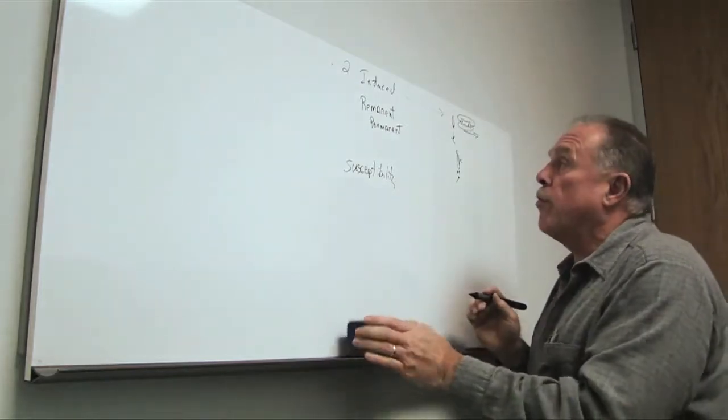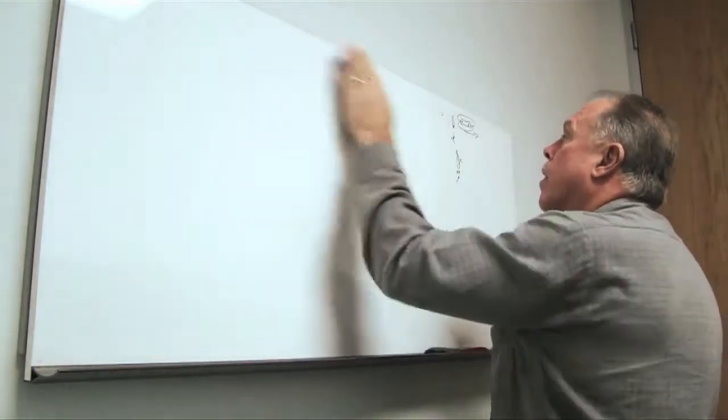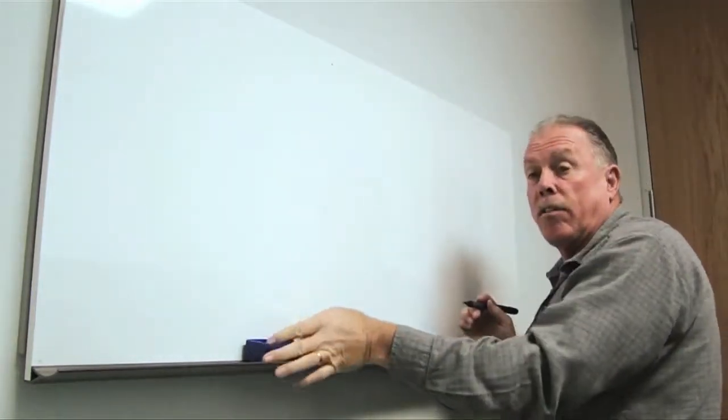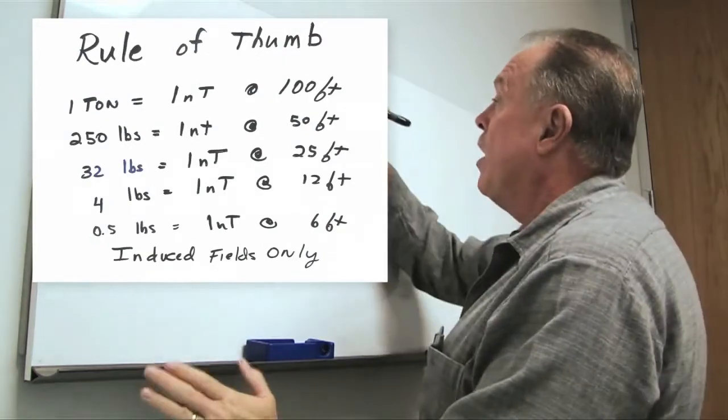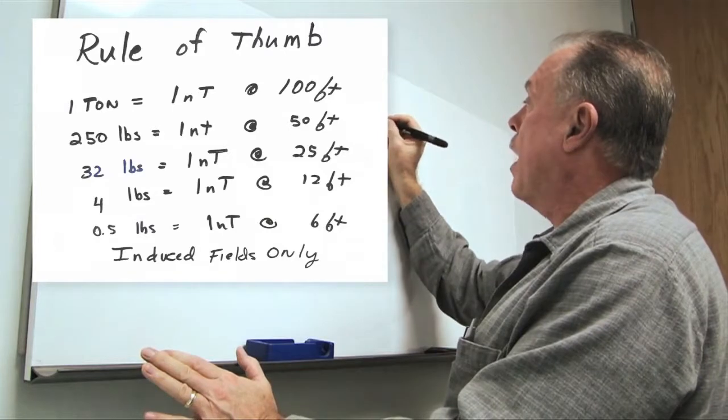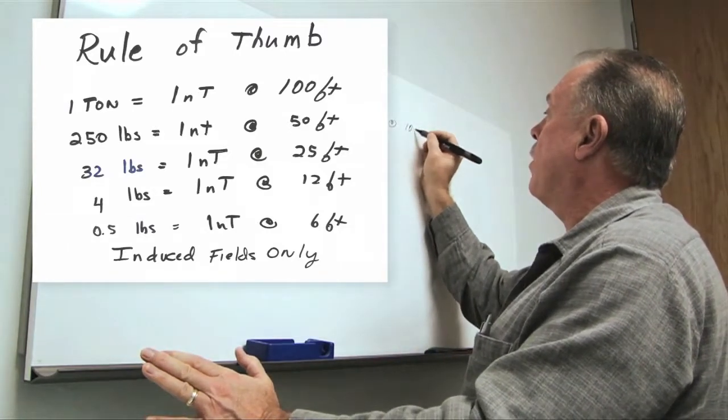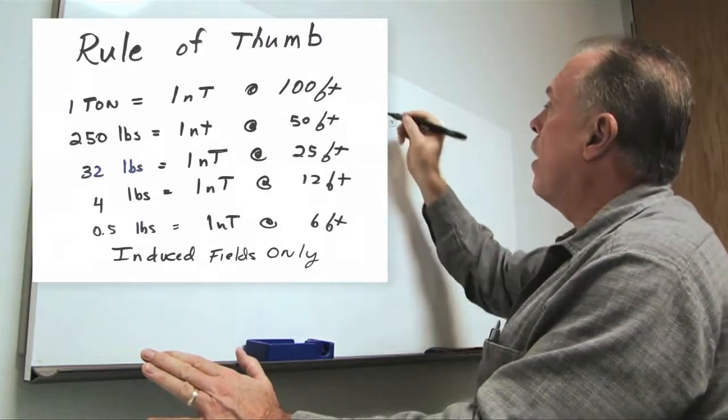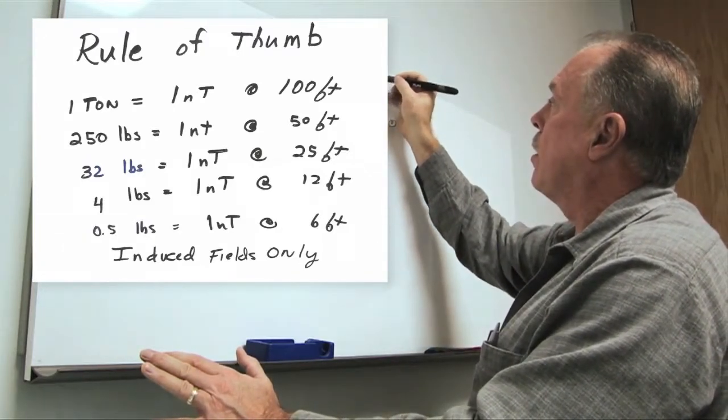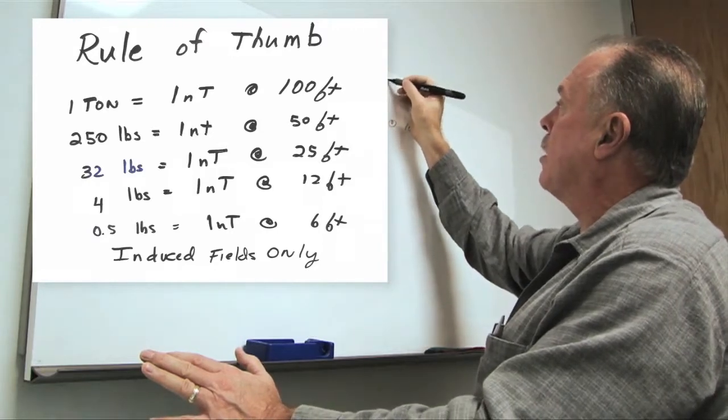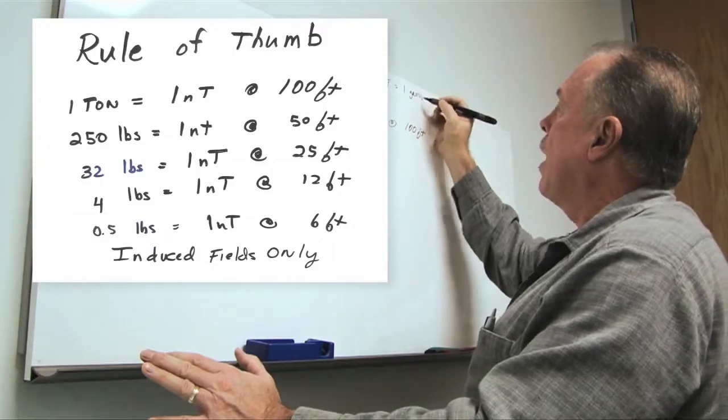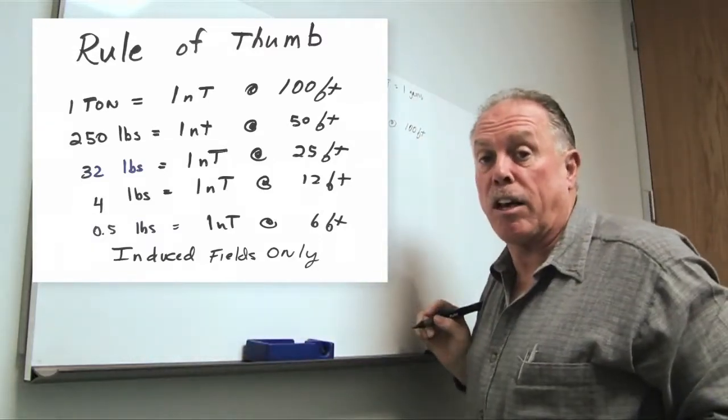So the rule of thumb that we use in determining the size of targets and therefore the distance which we can see them is that one ton equals one nanotesla at 100 feet. Now one nanotesla, there are 100,000 nanoteslas equals one gauss. And one gauss is basically the strength of the Earth's magnetic field.